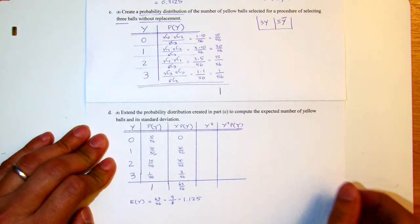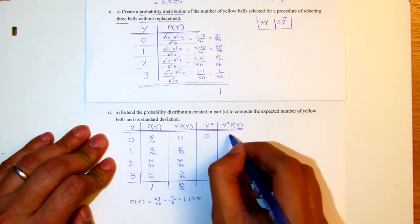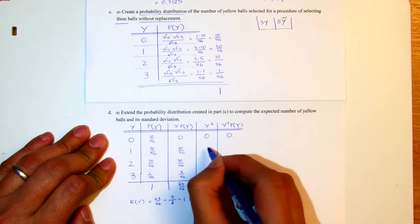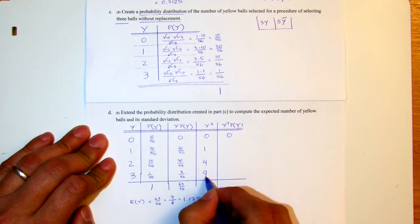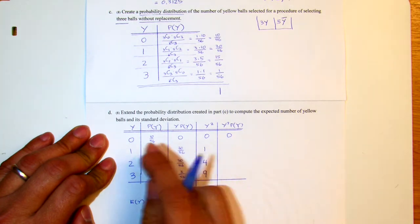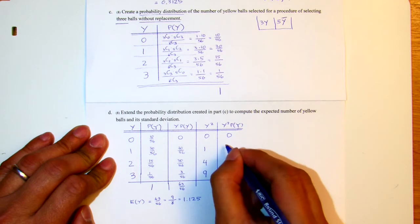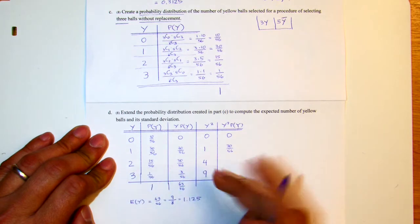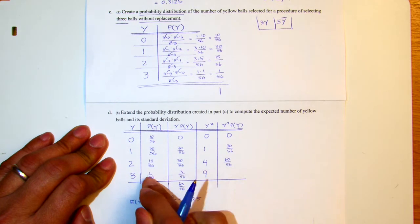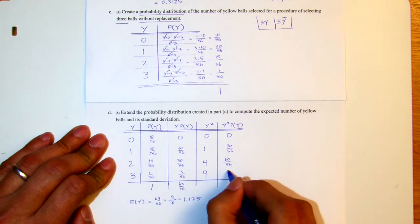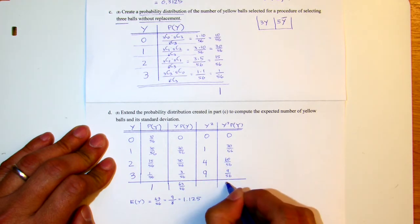Now the second extension: this is 0 here multiplied by the probability, that's 0. 1 squared, 2 squared, and 3 squared multiplied by the corresponding probability will give me 30 over 56, that's 60 over 56, and then 9 over 56, which ends up with 99 over 56.